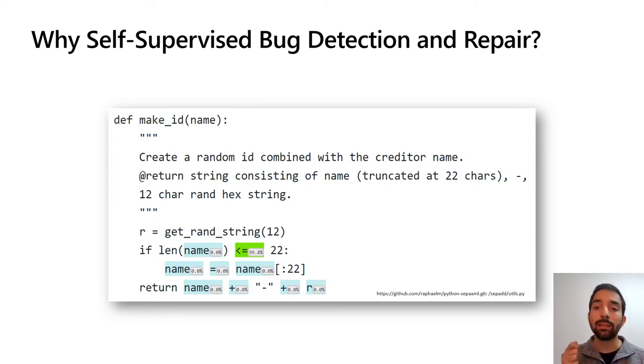More generally, the intent of the developer is partially observed through the code's formal structure, but also through the ambiguous natural language found in code comments and programming language identifiers. In the example in the slide, the operator in green should have been a greater than.